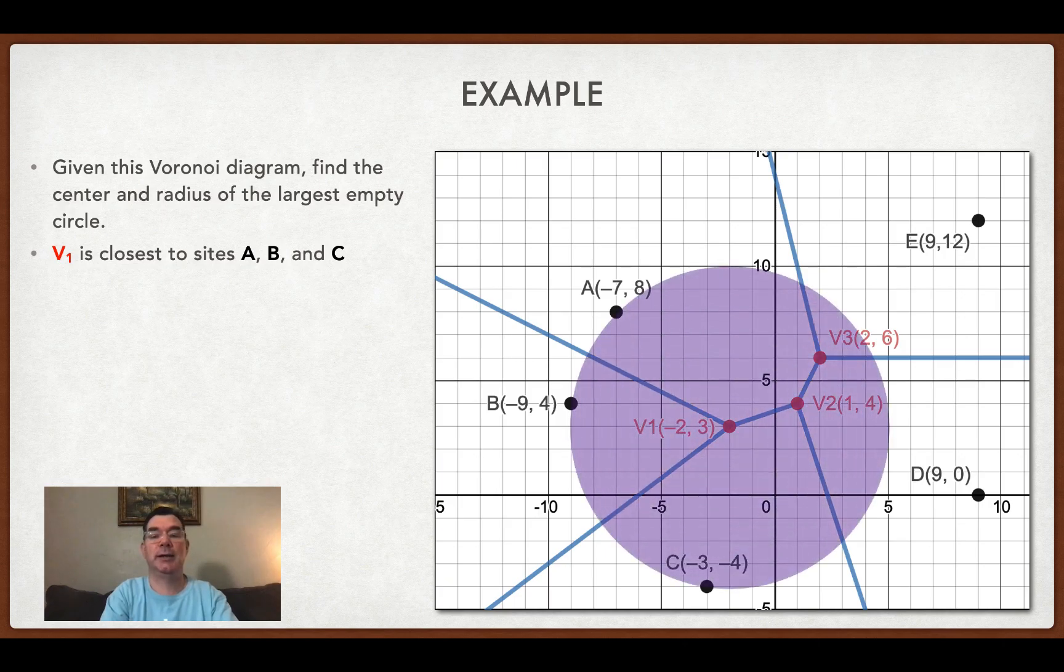So let's look at vertex 1. There's the circle that touches sites A, B, and C. Those are the nearest towns to vertex 1. So I want to know what the distance is from vertex 1 to any of those three towns. It's going to be the same for all three.